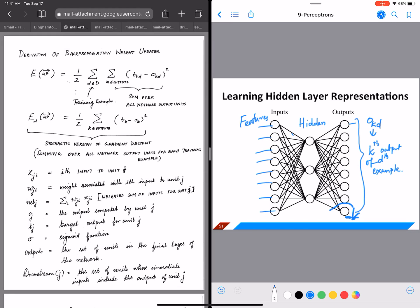Now Ed(w) is nothing but 1/2 * sigma over k in outputs * (tdk - ok)^2. So we are only looking at the error for that training example, so the summation over d goes away and we remove that from the first equation to get the second equation.